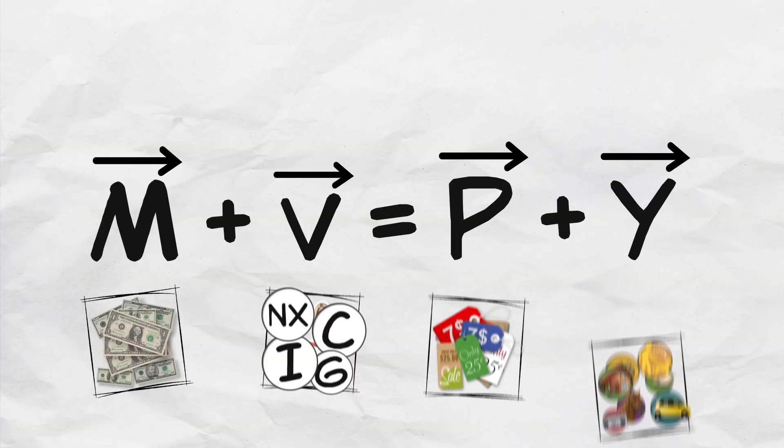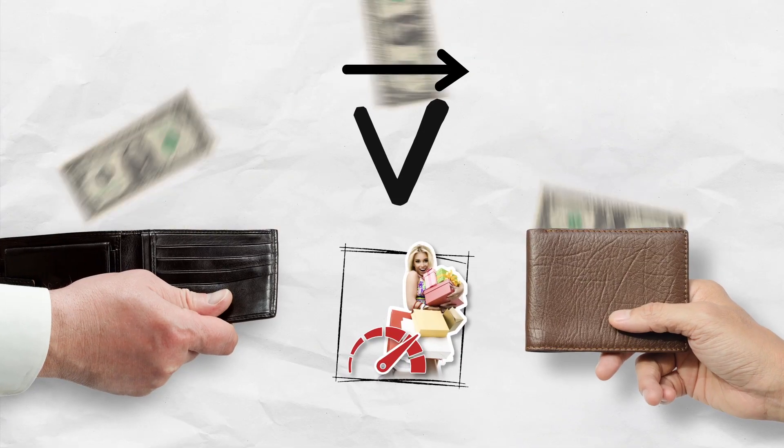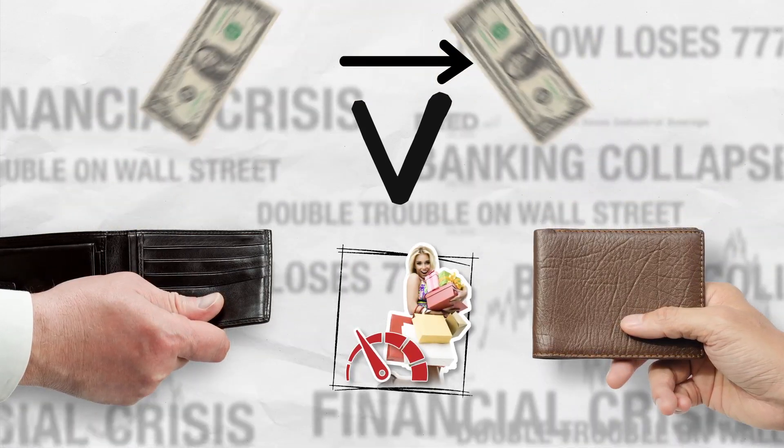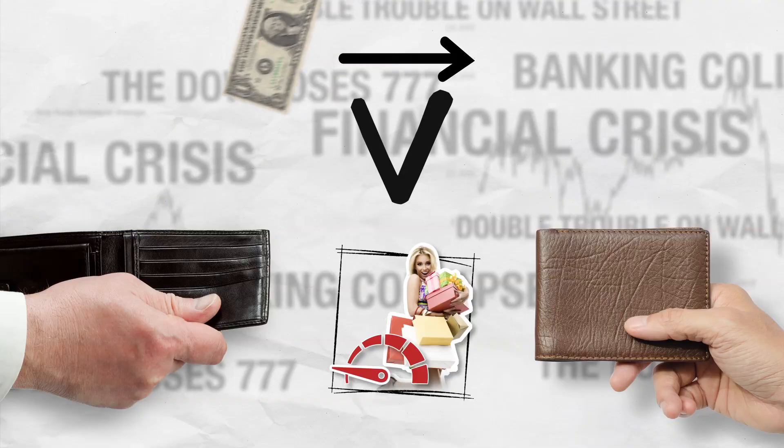Let's illustrate with another example. Suppose that consumption growth decreases. Why might this happen? Fear. Imagine that consumers suddenly become pessimistic and fearful about the economy, as they did in 2008, when it looked like the banking system was on the edge of collapse. Workers and consumers, fearing they might lose their jobs, cut back on their spending. They try to hold on to their money — instead of buying a new car, they hold on to their old car; they decide now is not a good time to remodel the kitchen; they start saving more money, just in case. The animal spirits, to use John Maynard Keynes' famous phrase, have turned negative. The decrease in consumption growth shifts the AD curve inwards.